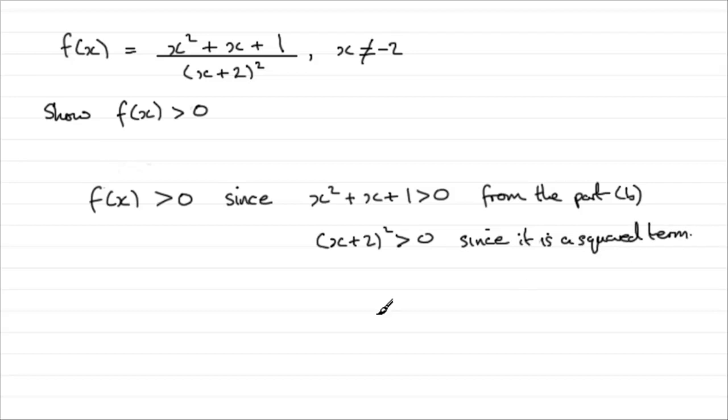So what we've got is f of x equals a positive value divided by positive, and that clearly has got to be greater than zero.